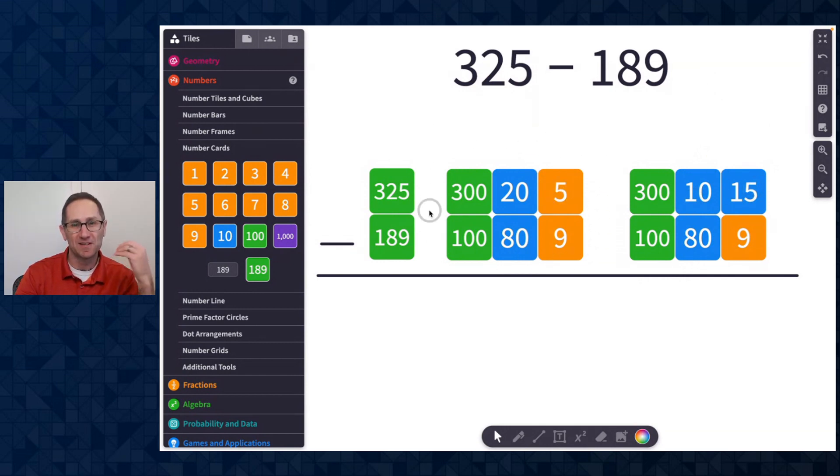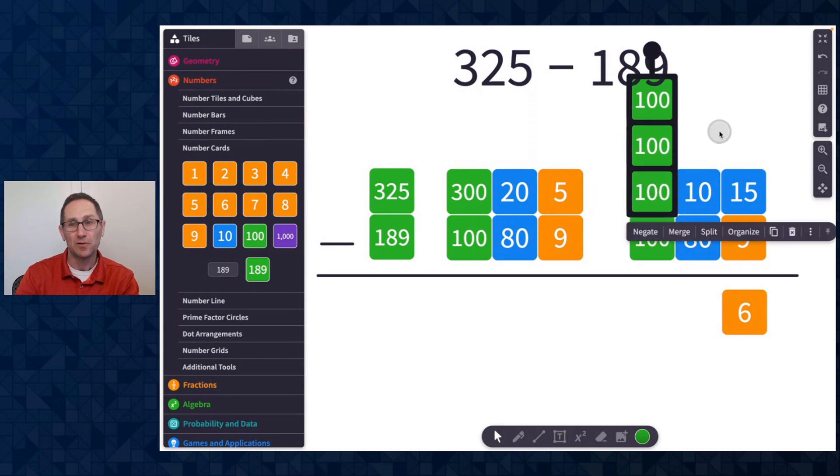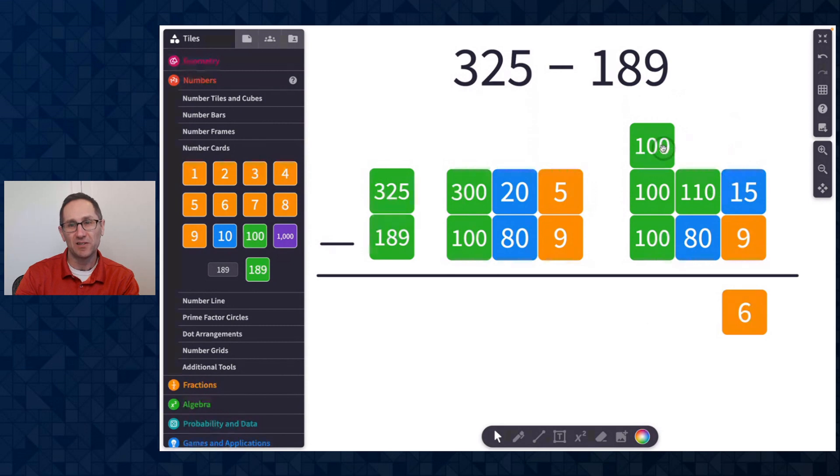I like to keep this here so I can see the original expansion of the number as I'm doing my work on the far right, and I know 15 minus 9 is 6. I'll do the same with 300. I'll split that into three of the 100 tiles, merge these together to make 110, and put those on top to make 200.